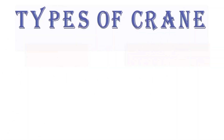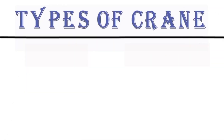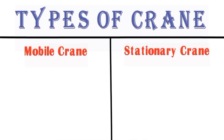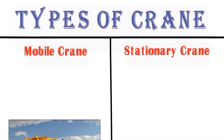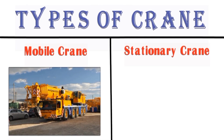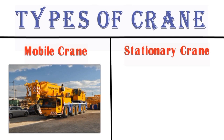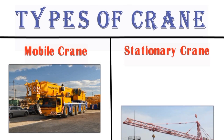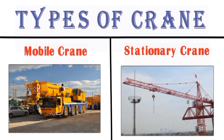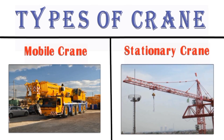Now let's talk about types of cranes. There are mainly two types of cranes. The first one is mobile crane and the second is stationary crane. Mobile cranes are cranes that we can easily move from one place to another for work — these include tire mounted and crawler types. Stationary cranes are fixed at one place and cannot be moved immediately.